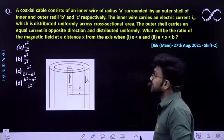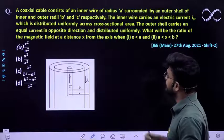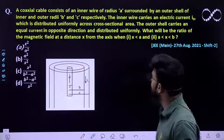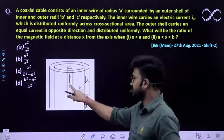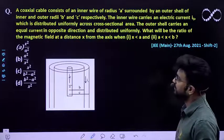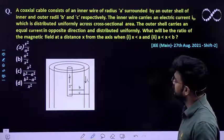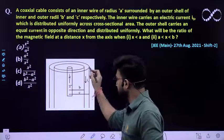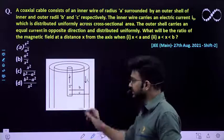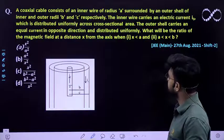Question says a coaxial cable consisting of an inner wire of radius A. So this is a wire which has been given to you having a radius of A, surrounded by an outer shell of inner radius B and outer radius C. So this is surrounded by another shell which is having the inner radius B and outer radius C.